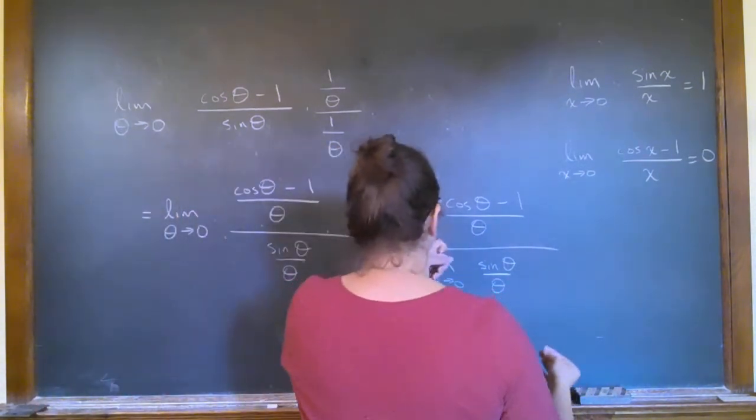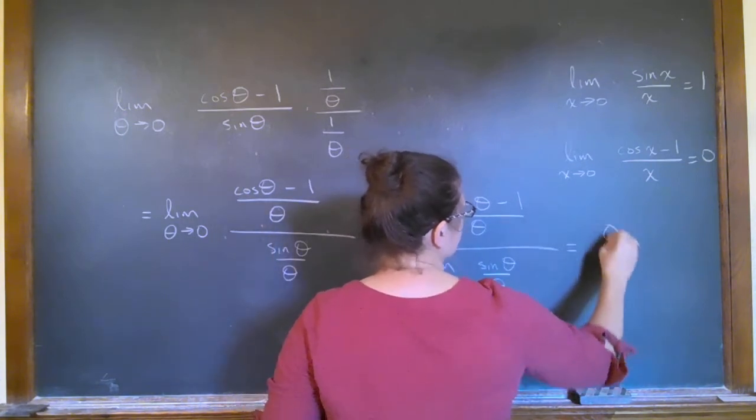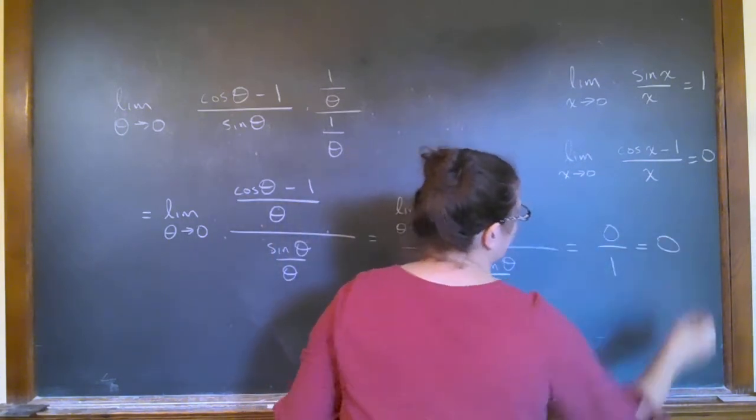Especially when I told you we'll learn an easier way to do these later. In any case, you can then see this is zero on the top and one, so this one comes to zero.